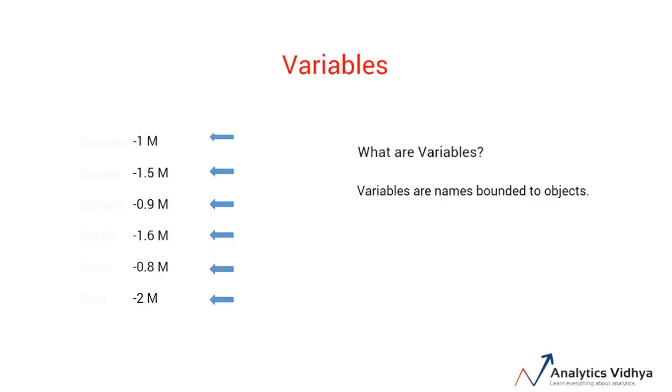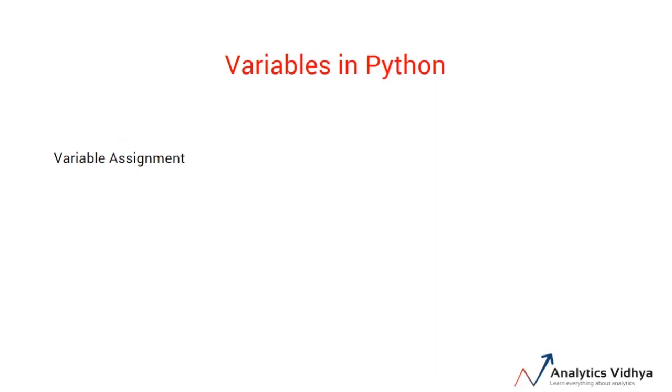Now since you know what variables are, how are these variables used in Python? Variables are first assigned a value and then it can be used in Python. So the general syntax is: first comes the variable name, then the equal to sign which is also called the assignment operator,